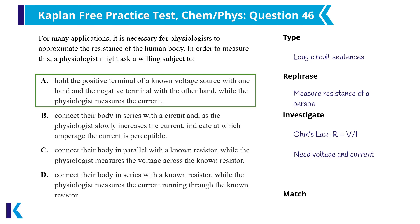A person's perception of current would not be a useful method of determining resistance, nor would it be ethical to create a perceivable shock, so B would not work. For answer choice C, voltage across a resistor in parallel to another component does not tell you anything about that component. Answer choice D unnecessarily includes an additional resistor and only measures current without expressing that a known voltage is applied. Determining resistance requires both current and voltage, which is why answer choice A works so well.